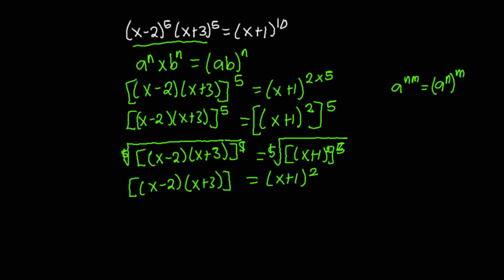Now we can remove the parentheses, so we are going to expand these two brackets. This gives us x squared plus 3x minus 2x minus 6, and this is equal to x squared plus 2x plus 1.